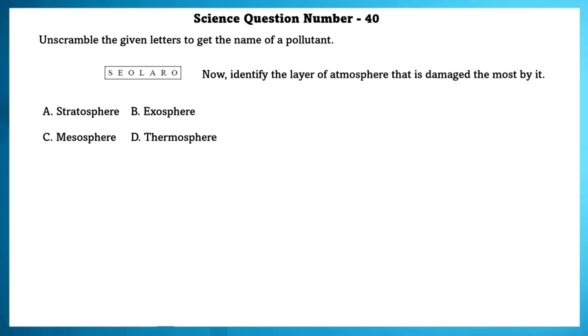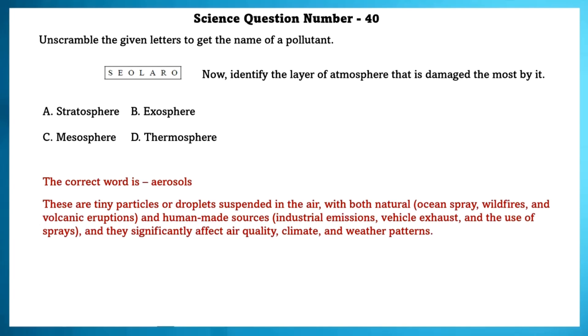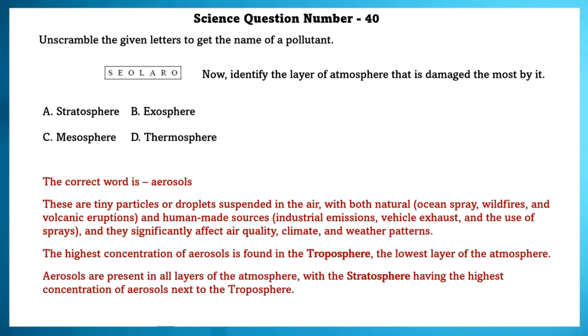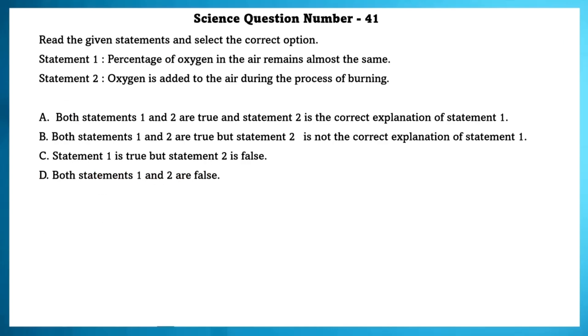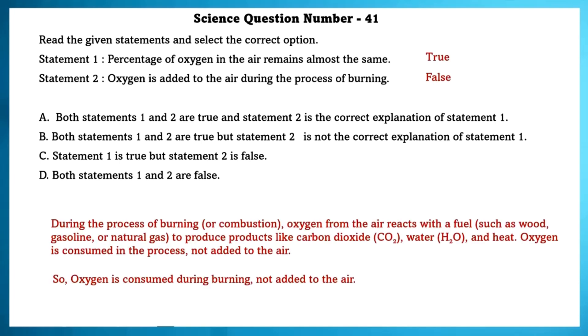Science question number 40. Unscramble the given letters to get the name of a pollutant. Now, identify the layer of the atmosphere that is damaged the most by it. The correct word is aerosols. These are tiny particles or droplets that are suspended in the air with both natural and human-made sources. And they significantly affect air quality, climate, and weather patterns. The highest concentration of aerosols is found in the troposphere, the lowest layer of the atmosphere. Aerosols are present in all layers of the atmosphere, with the stratosphere having the highest concentration of aerosols next to the troposphere. Science question number 41. Read the given statement and select the correct options. Percentage of oxygen in the air remains almost the same. Yes, this is true. Oxygen is added to the air during the process of burning. This is false. During the process of burning, oxygen from the air reacts with the fuel to produce products like carbon dioxide, water, and heat. Oxygen is consumed during the process, not added to the air. So, oxygen is consumed during burning, not added to the air.